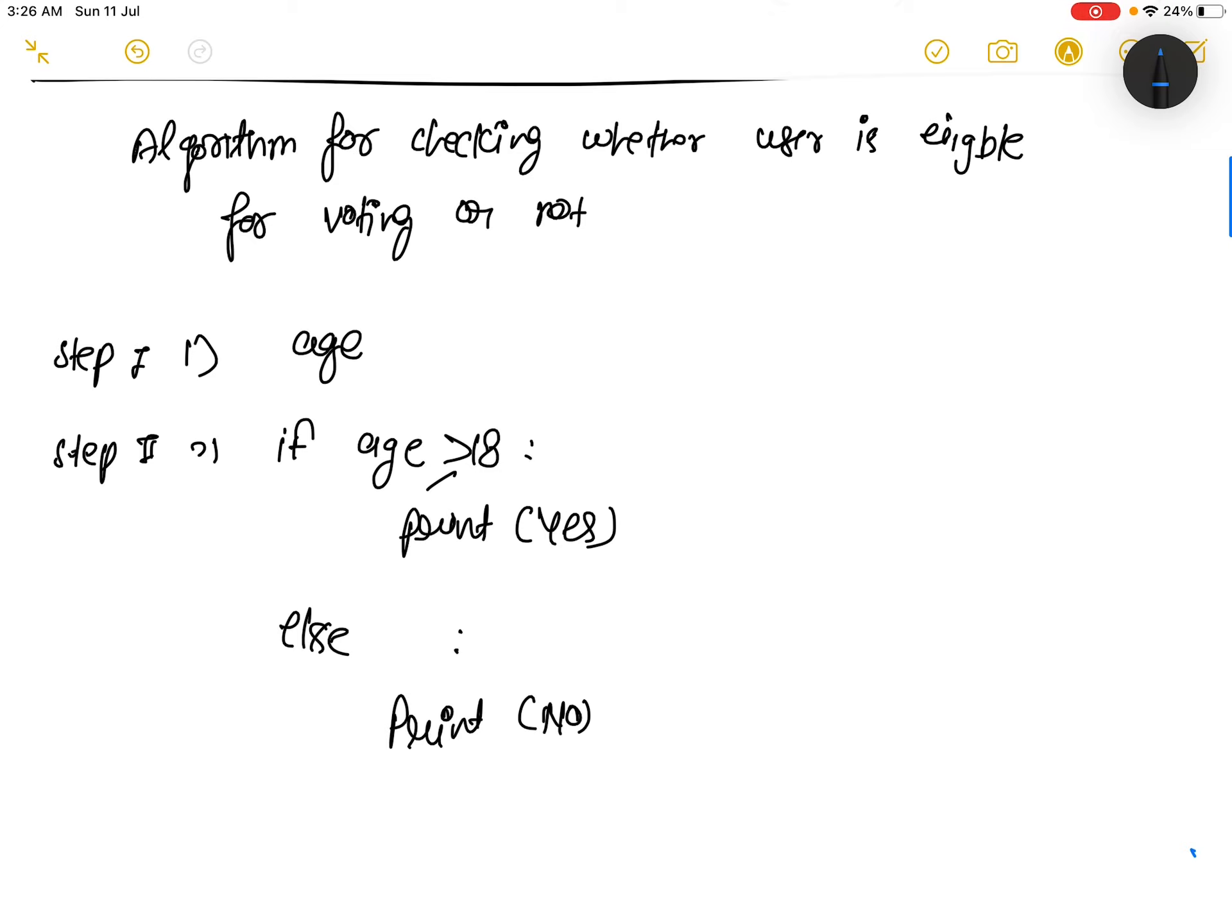It will execute one time. In the second line, if the age is greater than or equal to 18, this will also execute for one time. If this condition is true, control will go on this line.